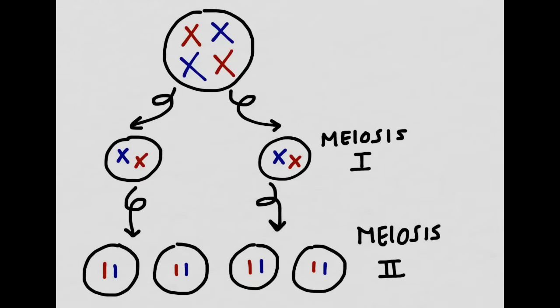Meiosis consists of two rounds of cell division, each one consisting of PMAT: prophase, metaphase, anaphase, and telophase, just like in mitosis. However, since there are two rounds of it, we go from having a parent cell to having four haploid daughter cells.